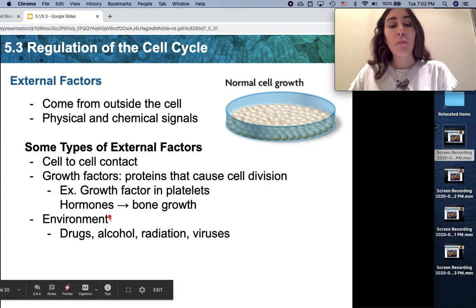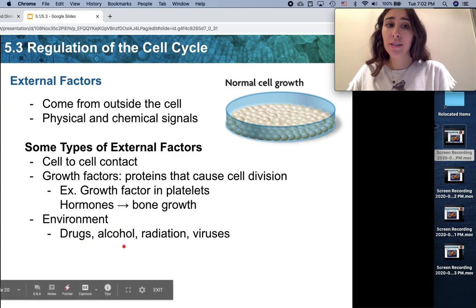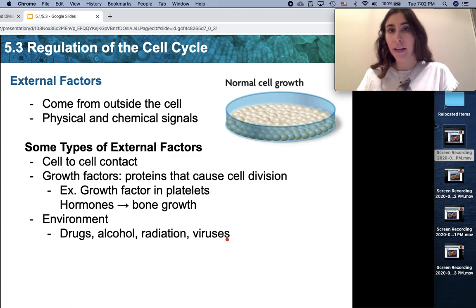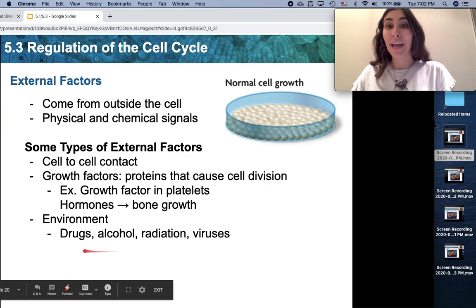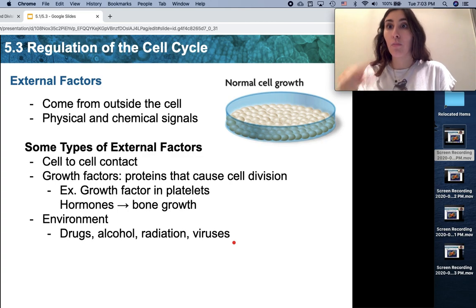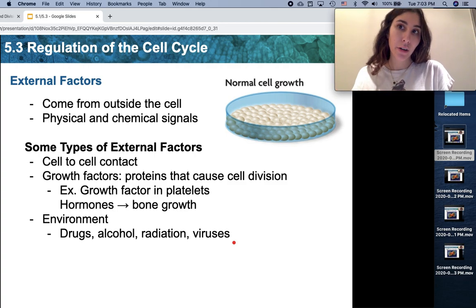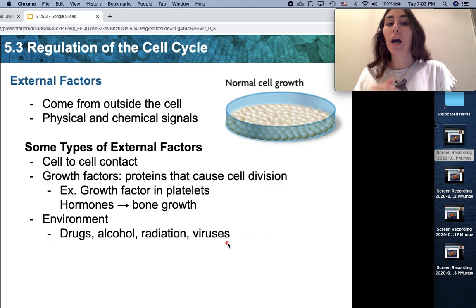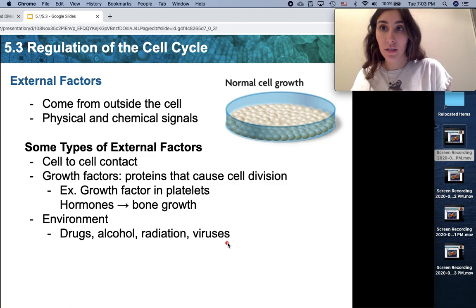Other growth factors can come from the environment outside of the cell. Things like drugs, alcohol, radiation, and viruses can all serve as external factors. They can signal cells to divide at faster and higher rates than normal. That's why these negative environmental factors can lead to excessive cell growth, excessive division, which means the cell cycle is happening more frequently than it should. This can lead to cancer. Exposure to radiation and unhealthy lifestyles and exposure to certain kinds of viruses can cause higher amounts of division, which can lead to cancer.